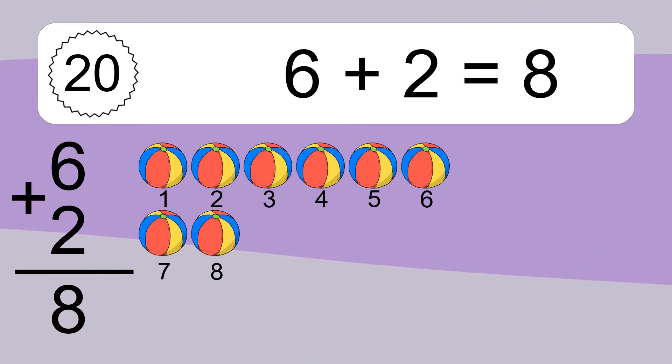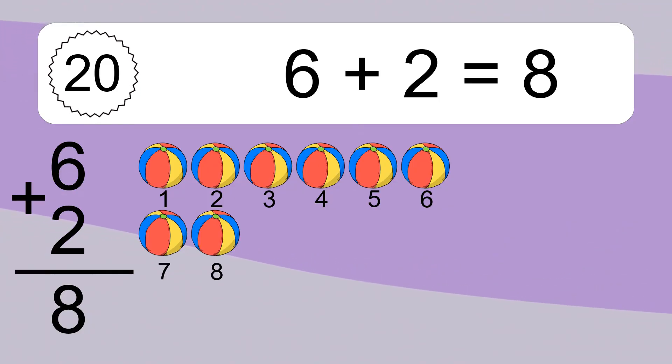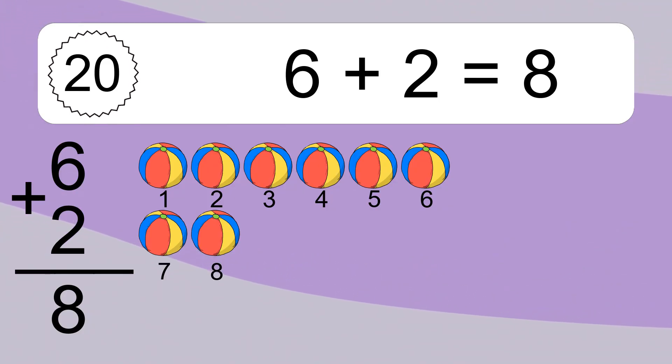Let's count it. 1, 2, 3, 4, 5, 6, 7, 8. Let's count it. 1, 2, 3, 4, 5, 6, 7, 8.